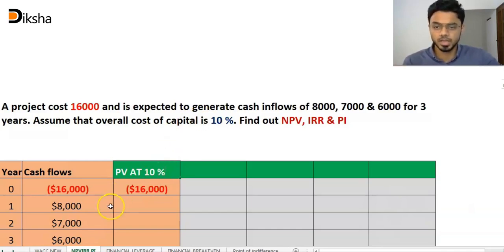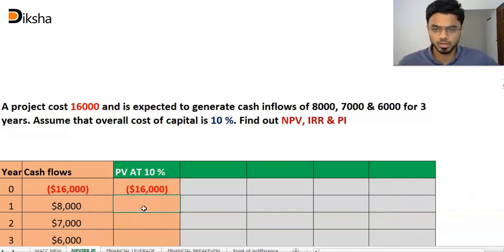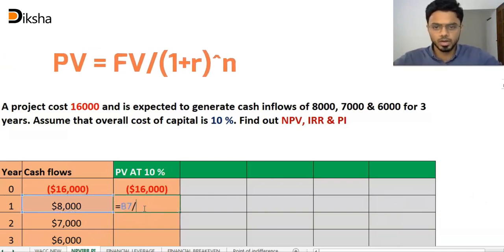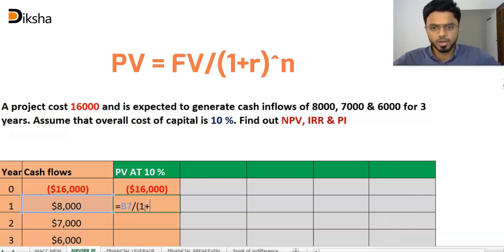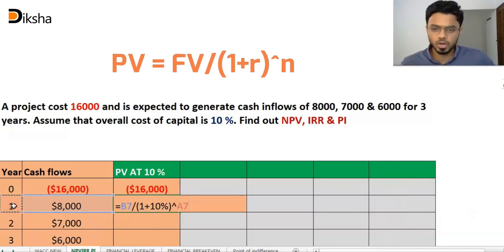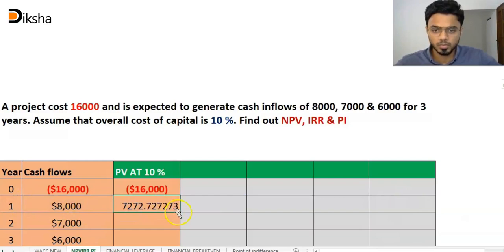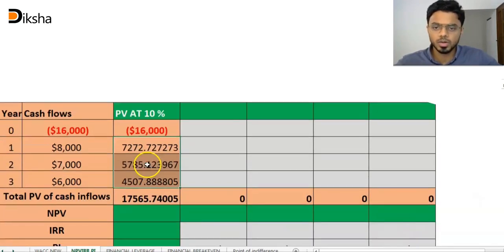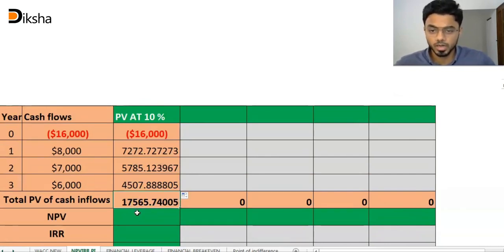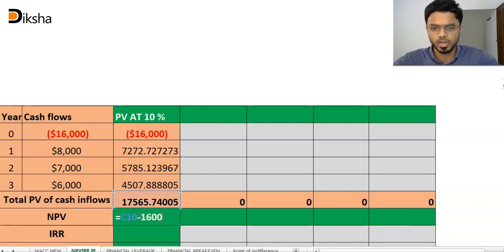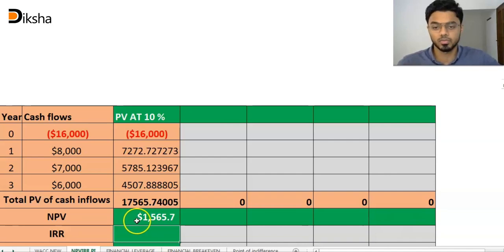To convert the cash inflows to present value, we calculate: 8,000 divided by (1 plus 10%) raised to 1, and similarly for years 2 and 3. After entering and dragging the formula, the total present value of cash inflows comes to 17,565. So NPV equals 17,565 minus 16,000, which gives NPV equal to 1,565.7.